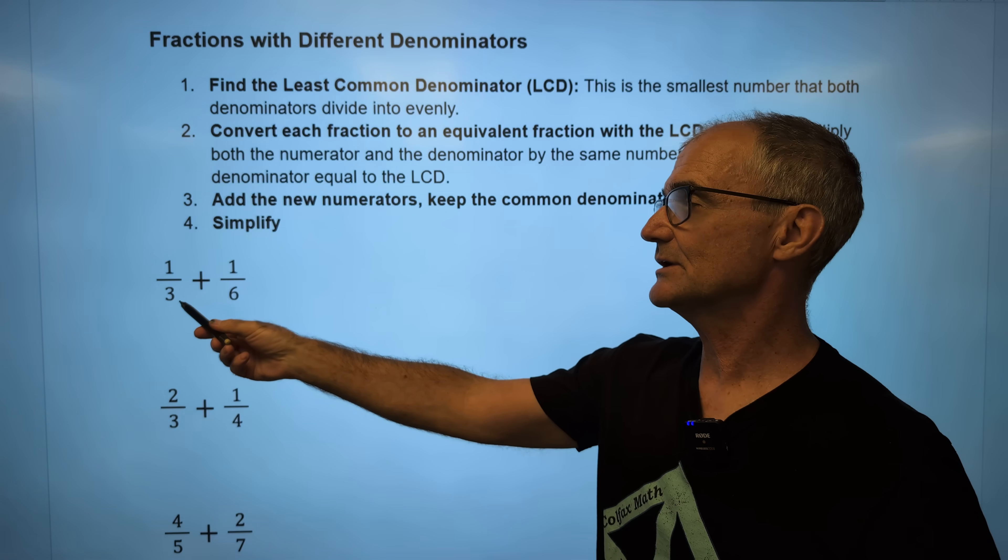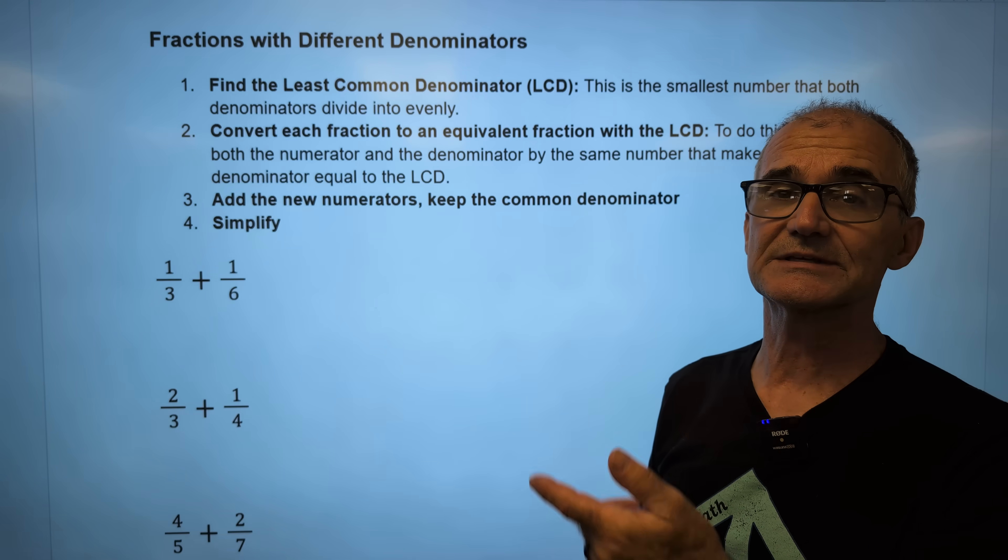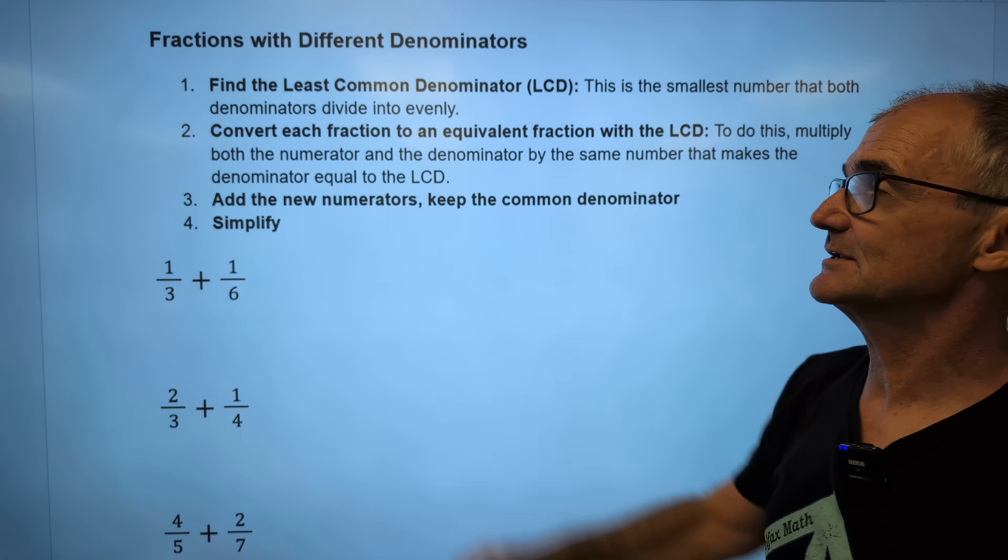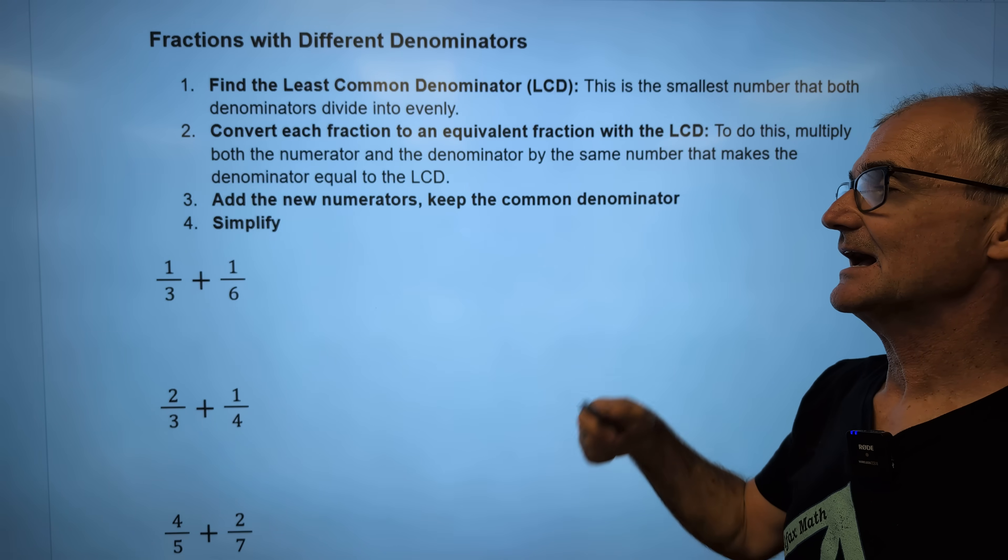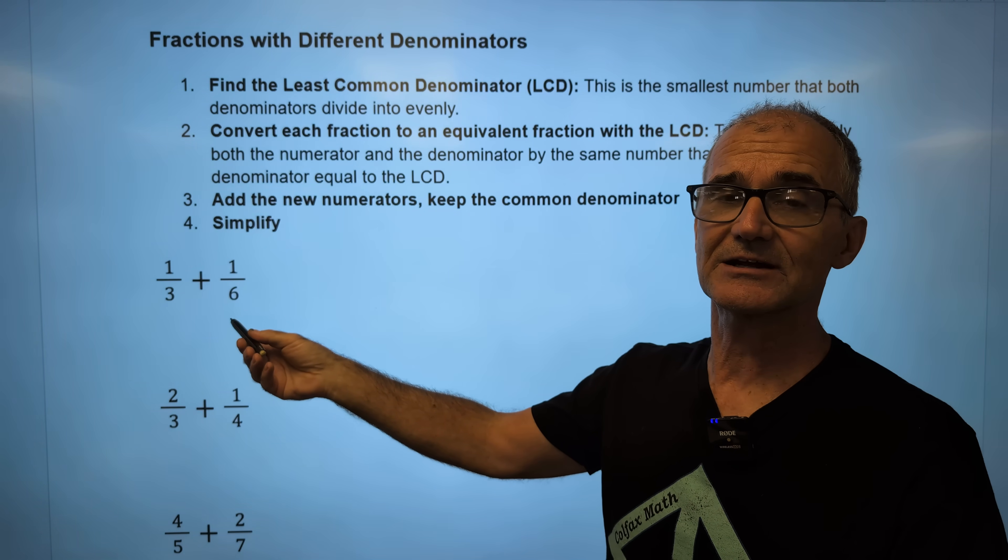Right here, I'm looking for what number will three and six both go into. That number will be six. So that's step one. The least common denominator is six. Now I think, how do I turn a six into a six? It's already a six. I don't have to do anything. Well, how do I turn a three into a six? I have to multiply it by two.